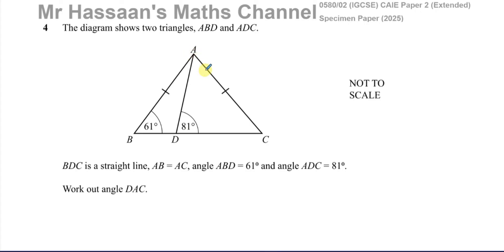DAC — to identify the angle, the vertex is at A in the middle, with D and C as the two arms from which the angle is made. So DAC is the angle here: it starts at D, A is in the middle where the angle actually is, and it goes to C. Let's call this angle X — that's the angle we're trying to find.